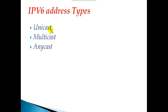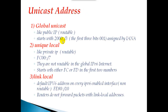Starting with the unicast category, inside unicast addresses we have three sub-categories. The first is global unicast address, the second is unique local address, and the third is link local address.